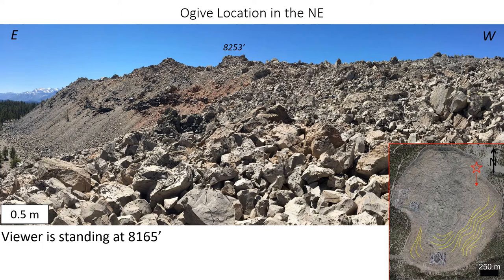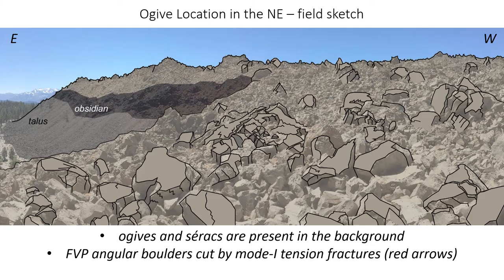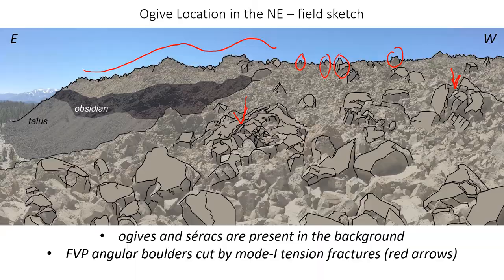This next image was taken in the northeast part of Obsidian Dome, looking south towards the ogive region. Like the previous images, we see chaotic blocks of finely vesicular pumice littering the surface with intermittent blebs of obsidian. Creating another field sketch and overlaying it on the photo, we can zoom into the different morphologies and structures in this ogive area. We see ridges and troughs along the horizon, as well as pillar shapes that dominate the background — also known as cirques. Finely vesicular pumice angular boulders also litter the surface and are again cut by mode 1 tension fractures.